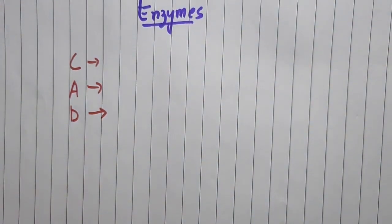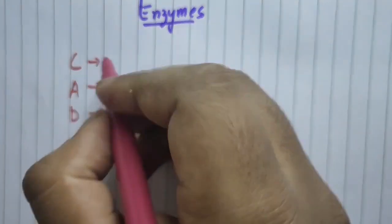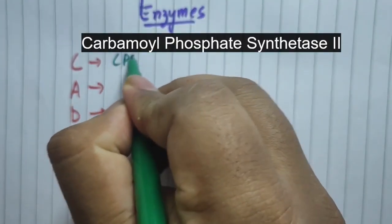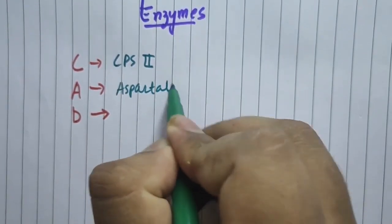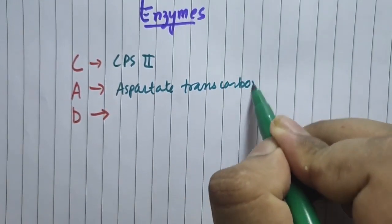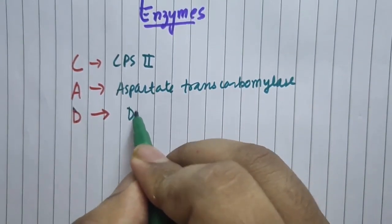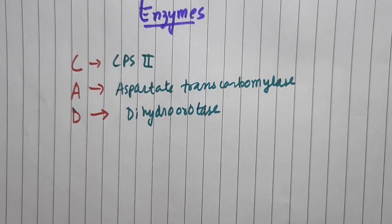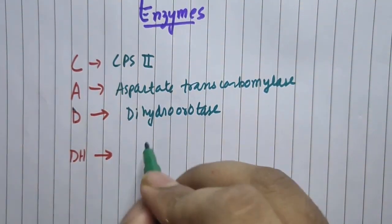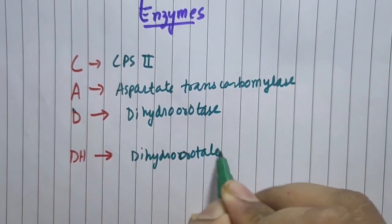The first group of enzymes is called the multifunctional enzyme complex, and the enzymes in this complex are CAD. C stands for CPS2, A stands for aspartate transcarbamylase, and D stands for dihydroorotase. The fourth enzyme is denoted as DH, and DH stands for dihydroorotate dehydrogenase.